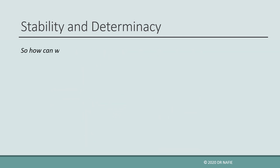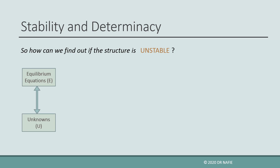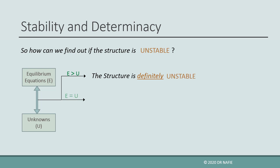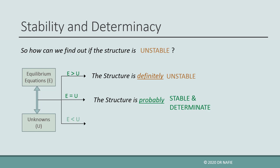To investigate the stability and determinacy of a structure, the following steps must be followed. First, evaluate and compare the number of unknowns and number of equilibrium equations. If the number of equilibrium equations is equal to the number of unknowns, then the structure is probably stable and determinate. If the number of equilibrium equations is less than the number of unknowns, then the structure is probably stable but indeterminate.